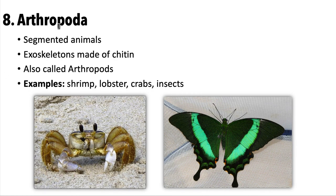Next is Arthropoda, or arthropods. They are segmented animals with exoskeletons. Examples include shrimp, lobsters, crabs, and insects. This is one of the broadest phyla — encompassing not only insects but also crabs, lobsters, and marine crustaceans. This phylum will have its own unit given how broad it is.